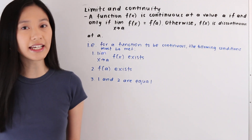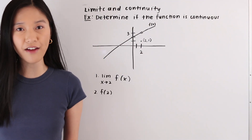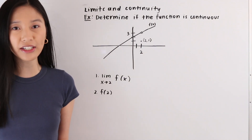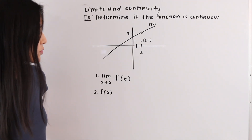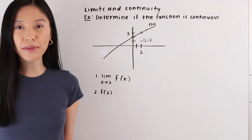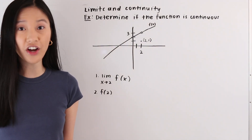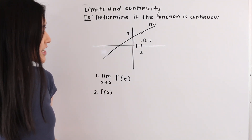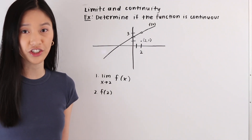Let's take a look at some examples and apply this. In this first example we are given a graph of f(x) and we want to determine if the function is continuous. Just by looking at the graph, we can see that this function is not continuous because we have a removable discontinuity at x equals two. But in order to prove this, we need to use the limit definition of continuity — we just need to prove the function is not continuous at one point.